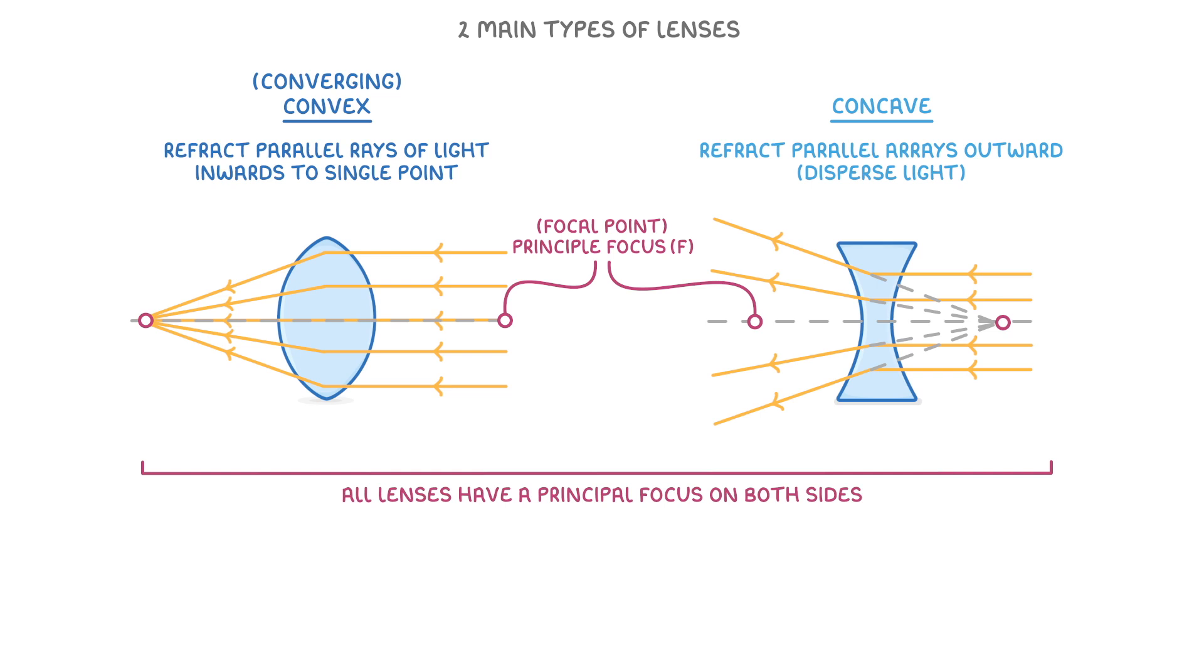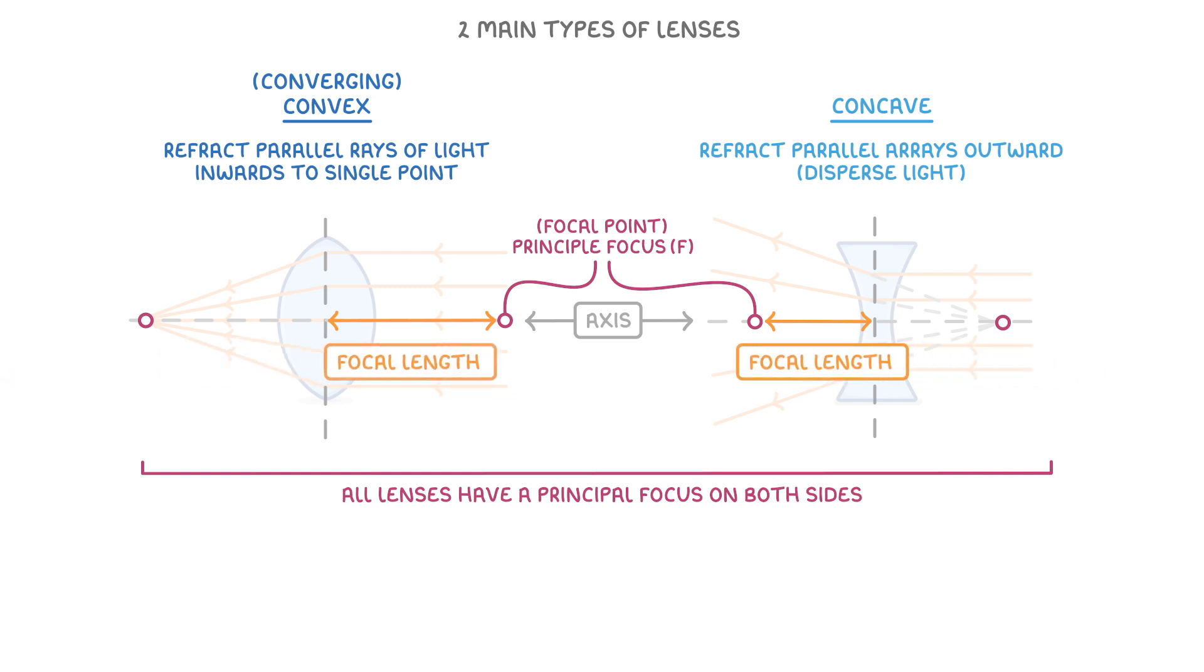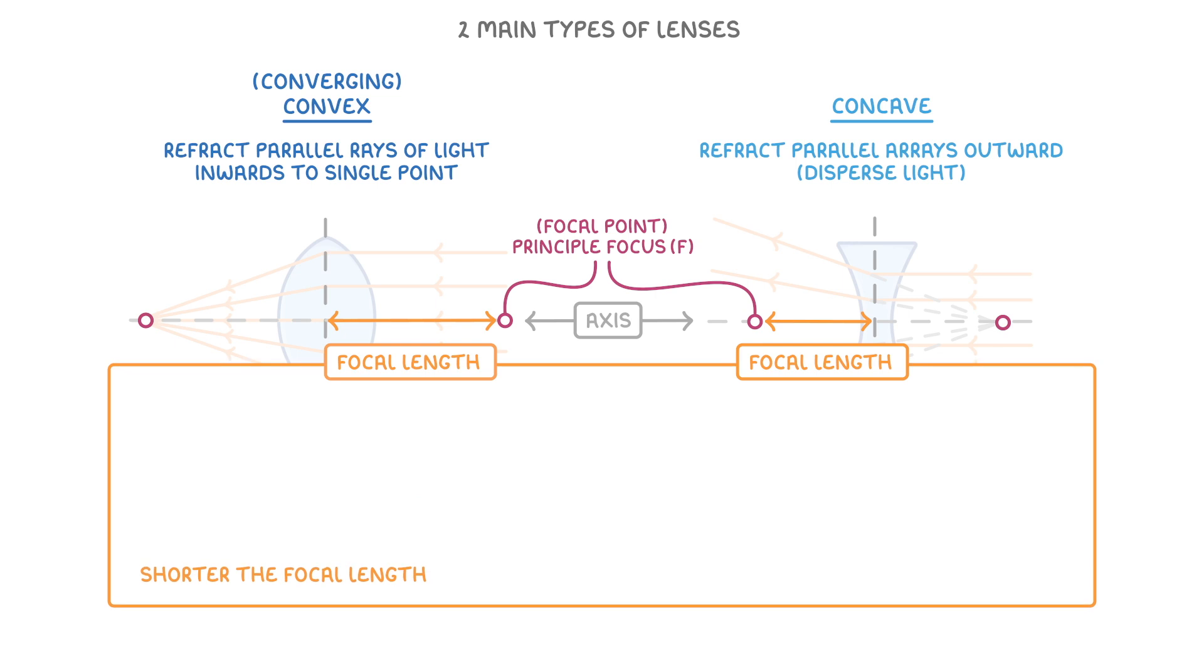Another important thing about the principal focus is that it will always sit on the axis, which is this line passing through the middle of the lens. The distance between the principal focus and the very centre of the lens is called the focal length, and the shorter the focal length is, the more powerful the lens will be, which just means that it will refract light more strongly.